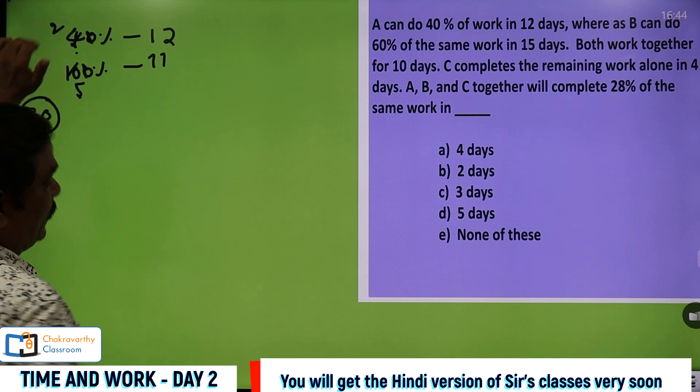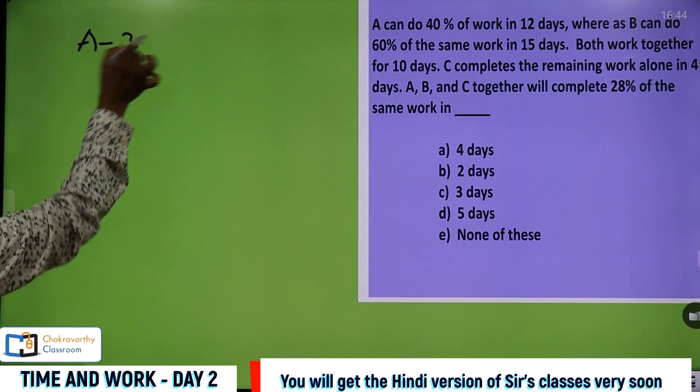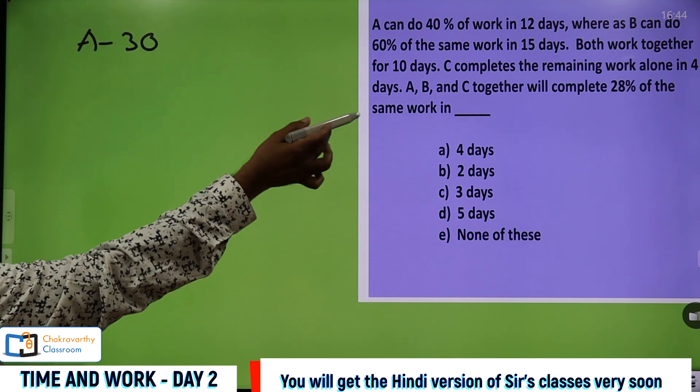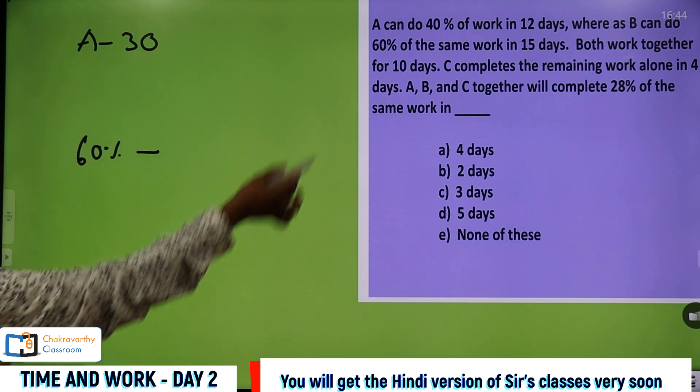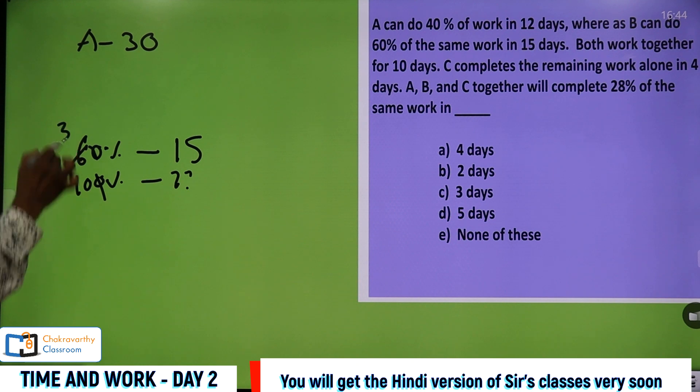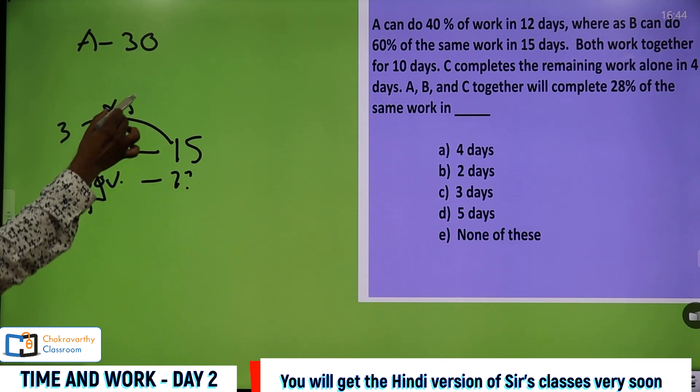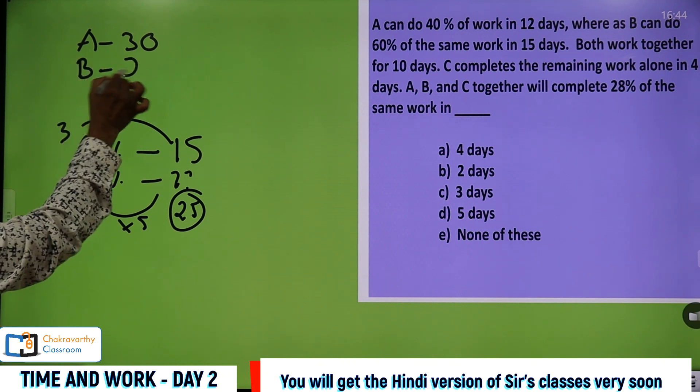A's capacity is A can do the work in 30 days. Now go for B. B can do 60% in 15 days. You can do it orally. 60% in 15 days, then 100% in how many days? Take again the two table: two threes, two fives. Three, how many times? 15 here, three fives. Similarly, five into here, five, 25. So now B can do the same work in 25 days. Now you can compare A and B on the common platform.